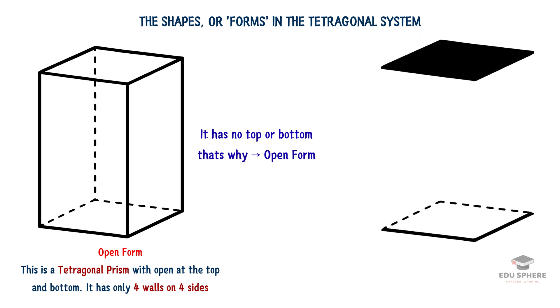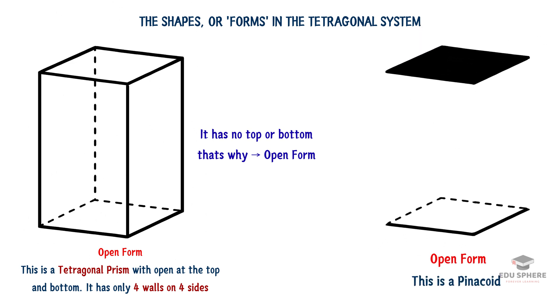To complete our crystal, we need another piece. This one, called a pinacoid, acts as the lid and the base. But just like the prism, it's also an open form on its own. It's just two flat planes.